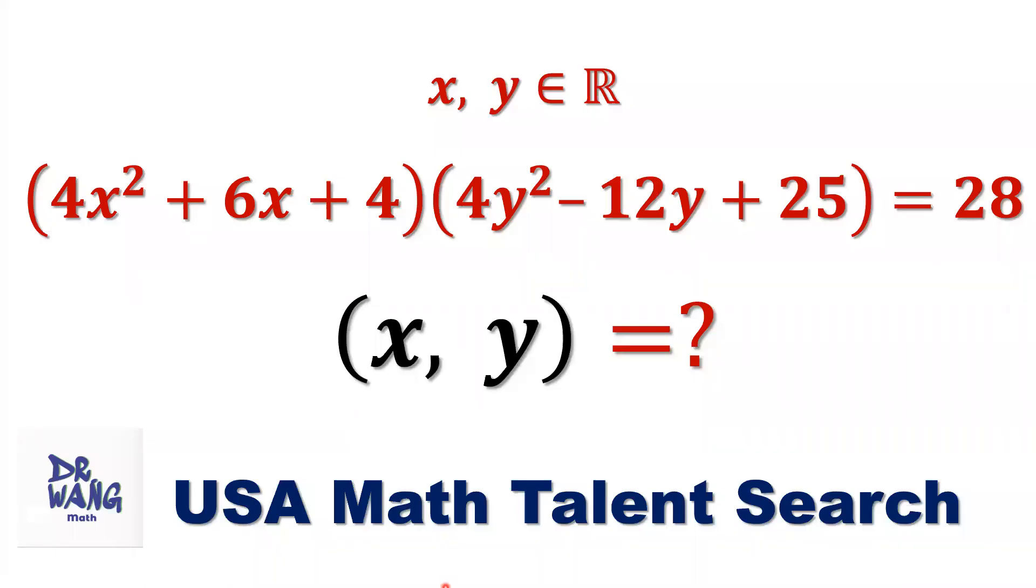Hello everyone, I'm Dr. Wen. Here is the question. If x and y are real numbers, 4x squared plus 6x plus 4 times 4y squared minus 12y plus 25 equals 28, what are values of x and y?